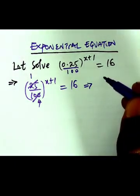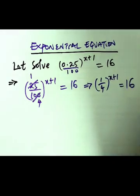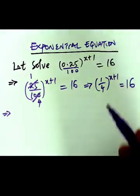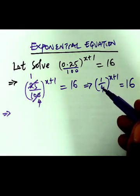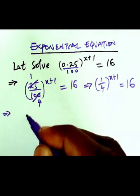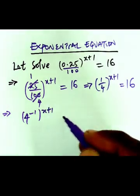One over four to the power of x+1 equals 16. The next thing we are going to do is write 1/4 in exponential form as 4 to the power of minus 1, then we have x+1, equals 16.